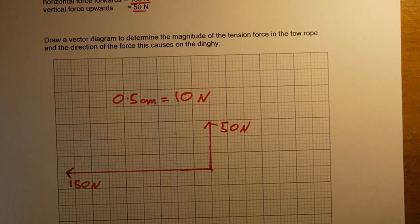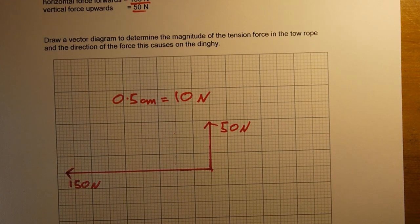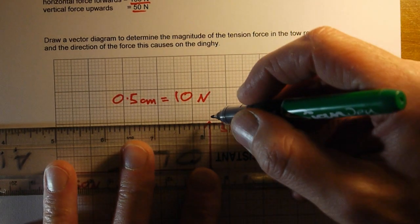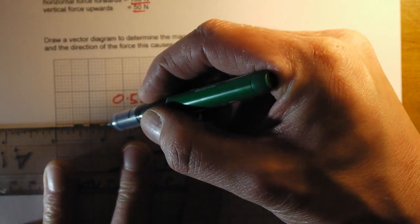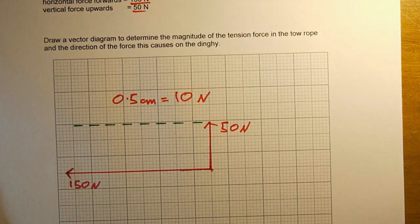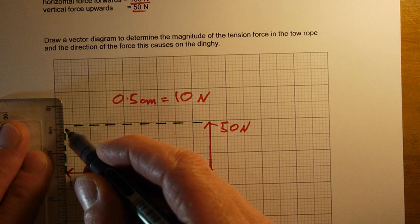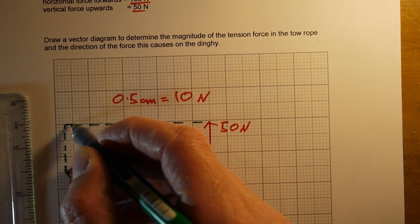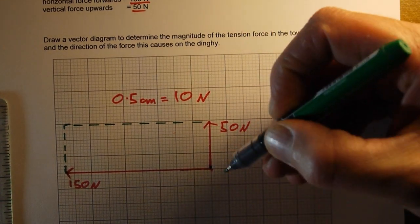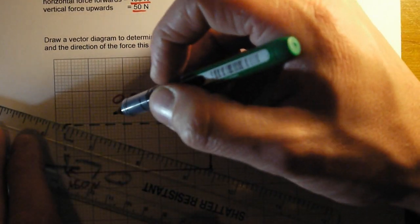Those two forces combine to produce a resultant force which is going to have a direction somewhere like this, but we need to find out the exact direction. To do that, we need to complete the rectangle. I'm going to draw across a horizontal line, dash this in so it's not too prominent, and then draw up a vertical line like this. Where these two meet, this corner is the furthest point of our resultant force. Our resultant force goes from the origin of these two vectors across the diagonal.